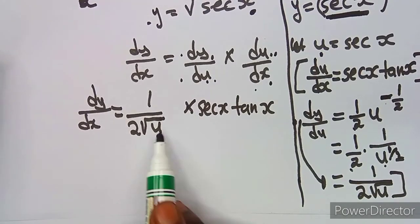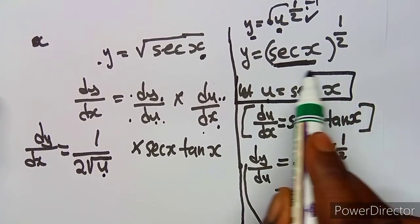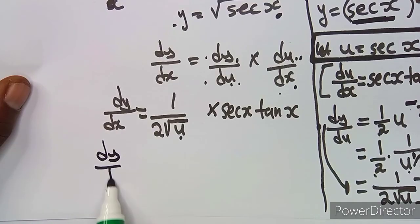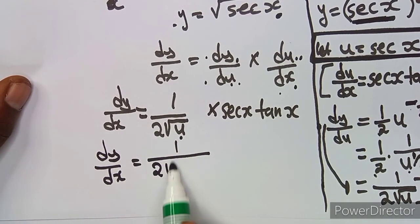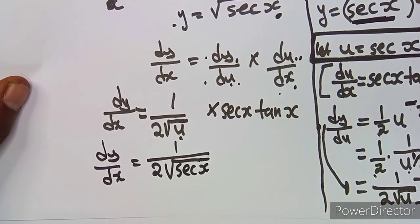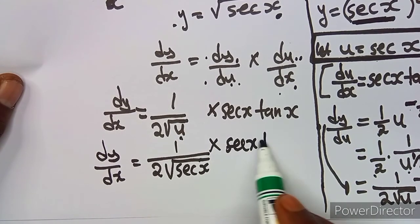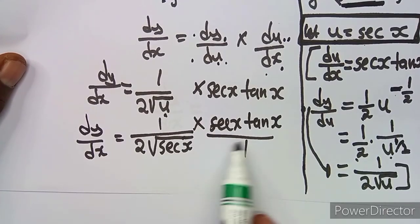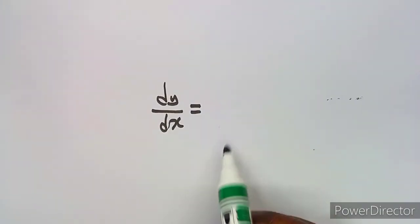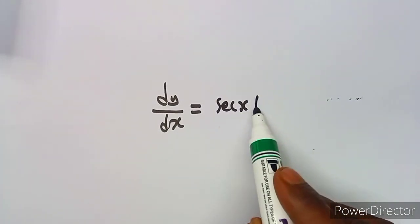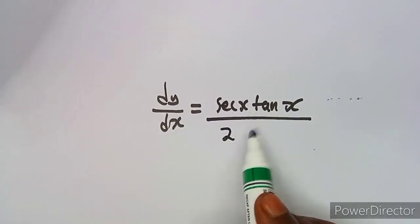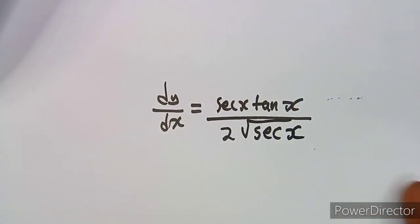Going back to where we said let u equal sec x, we substitute u with sec x. So dy/dx equals 1 over 2√(sec x) multiplied by sec x tan x. Combining the numerators and denominators together: the numerator becomes sec x tan x, and the denominator is 2√(sec x). So the final answer is dy/dx = sec x tan x over 2√(sec x).